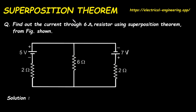In this video, we will see a problem on superposition theorem. The question is: find out the current through the 6 ohm resistor using superposition theorem from the figure shown. We have to find the current through this 6 ohm resistor by using superposition theorem.